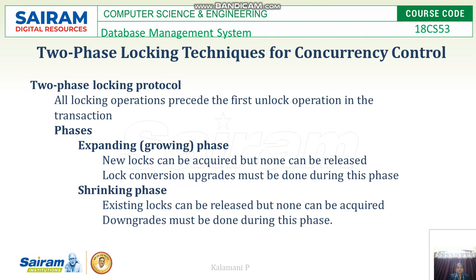The two-phase locking protocol has two phases: the expanding phase and the shrinking phase. In the expanding phase, new locks can be acquired but none can be released. Lock upgrades must be done during this phase. In the shrinking phase, existing locks can be released but no new locks can be acquired. Lock downgrades must be done during the shrinking phase.